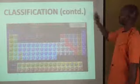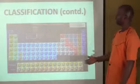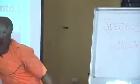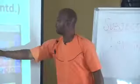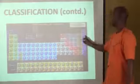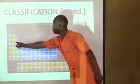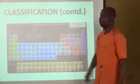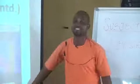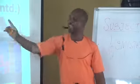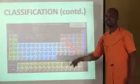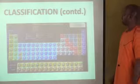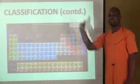The periodic table can be further classified into S-block elements — groups 1 and 2 — P-block elements — groups 3 to 8 — D-block elements in between the S-block and the P-block, and F-block elements listed below. S stands for sharp, P stands for principal, D stands for diffuse, and F stands for fundamental.